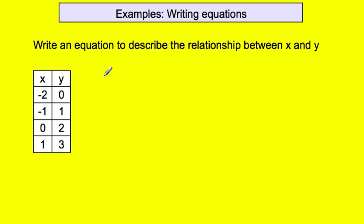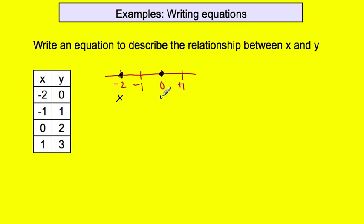The way that you can be sure to figure this out is just draw yourself a real short number line. Here is negative 2, there's negative 1, and there is 0, and there's positive 1 over there. From negative 2, where the x is, to 0, where the y is — we're just using the number line to figure out what happened to the x to get to the y. You can find out by figuring out how many steps away it is: one step, two steps, which means if it's going to the right, I'm adding 2.